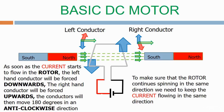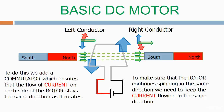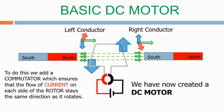To make sure that the rotor continues spinning in the same direction, we need to keep the current flowing in the same direction. To do this we add a commutator, which ensures that the flow of current on each side of the rotor stays the same direction as it rotates. We have now created a DC motor.